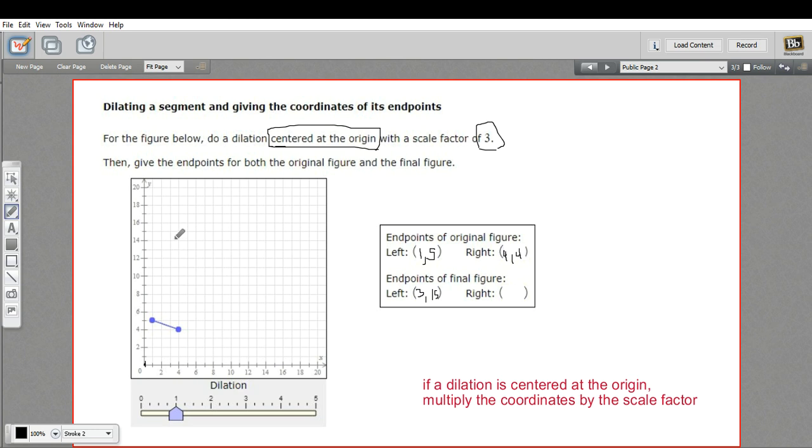Whoops, right there. Okay. And our right endpoint is going to be four times three is 12 and four times three is 12. So this is at the point (12,12). So that would be right there.